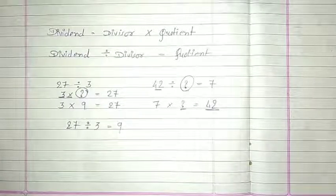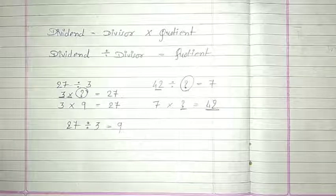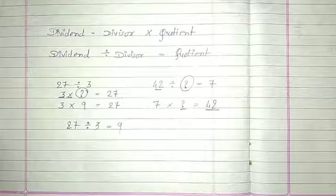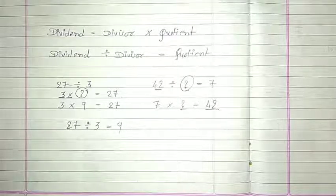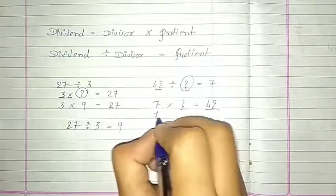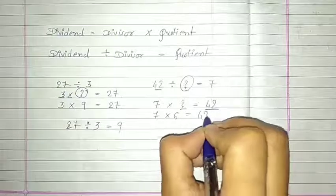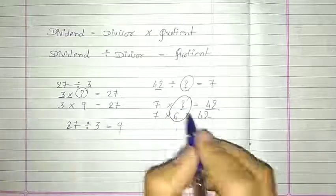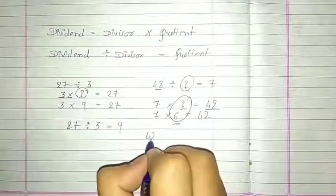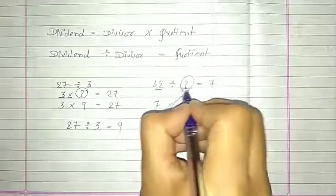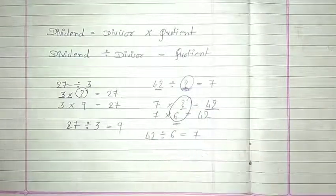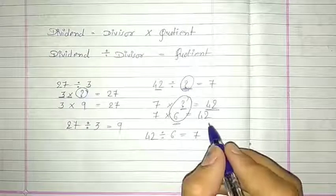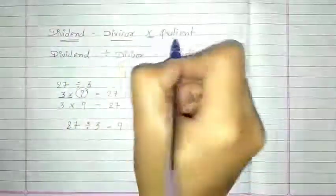7 1s are 7, 7 2s are 14, 7 3s are 21, 7 4s are 28, 7 5s are 35, and 7 6s are 42. So we get 7 6s are 42. Question mark की जगह पर हमें 6 मिला, so our answer is 6. 42 divided by 6 is equal to 7. इससे prove होता है: dividend is equal to divisor into quotient.